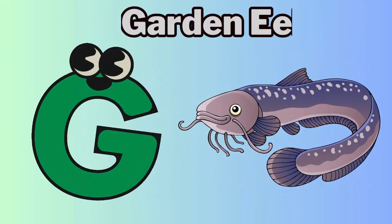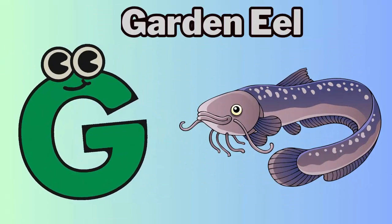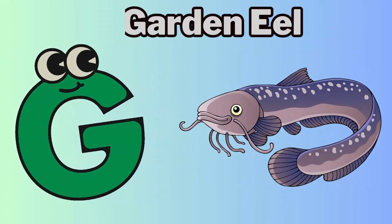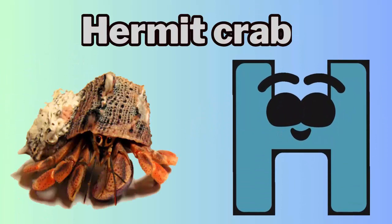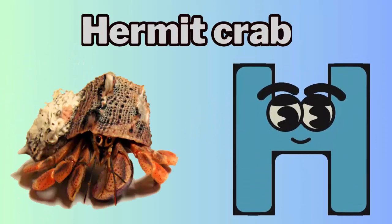G is for garden eel. Guh, garden eel. H is for hermit crab. Ha, hermit crab.